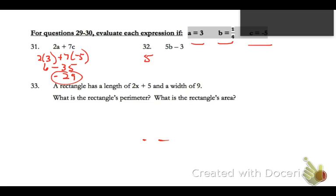Number 32, we'll substitute in one-fourth for B minus 3. I can think of this as 5 over 1, so I'm going to multiply numerators together and denominators. I'll get 5 fourths minus, I'm going to turn this into a fraction.